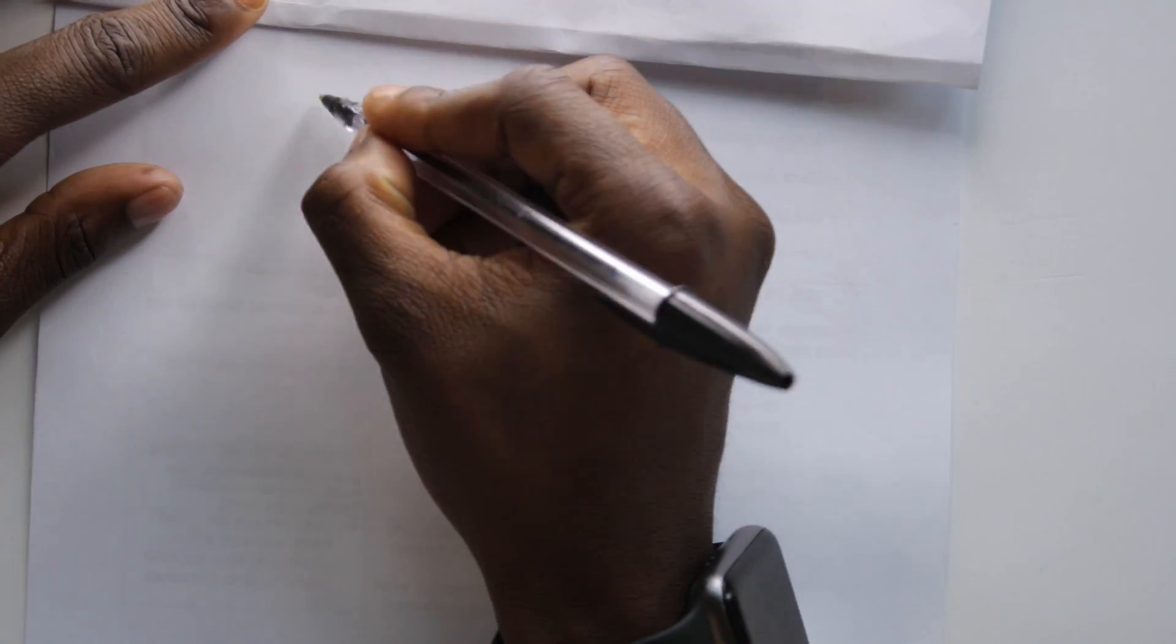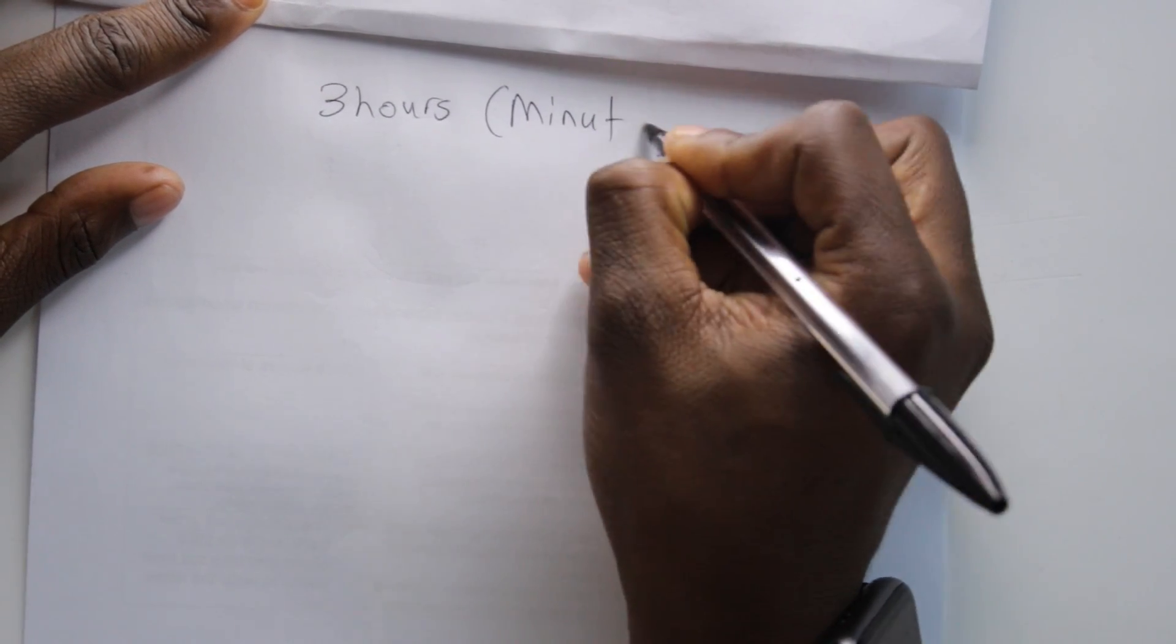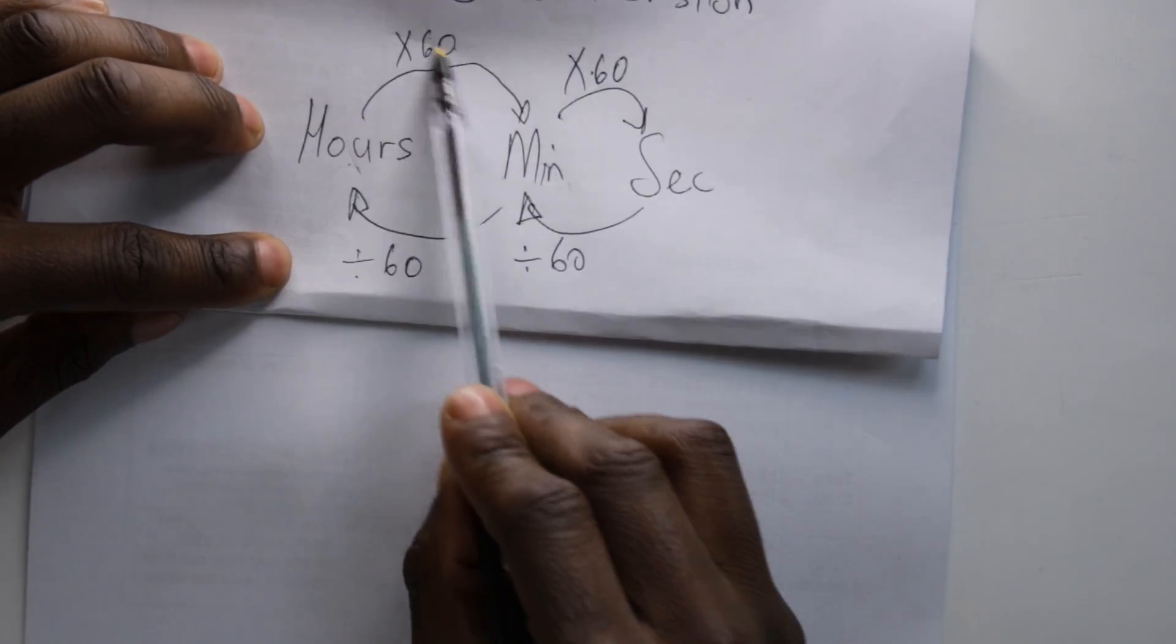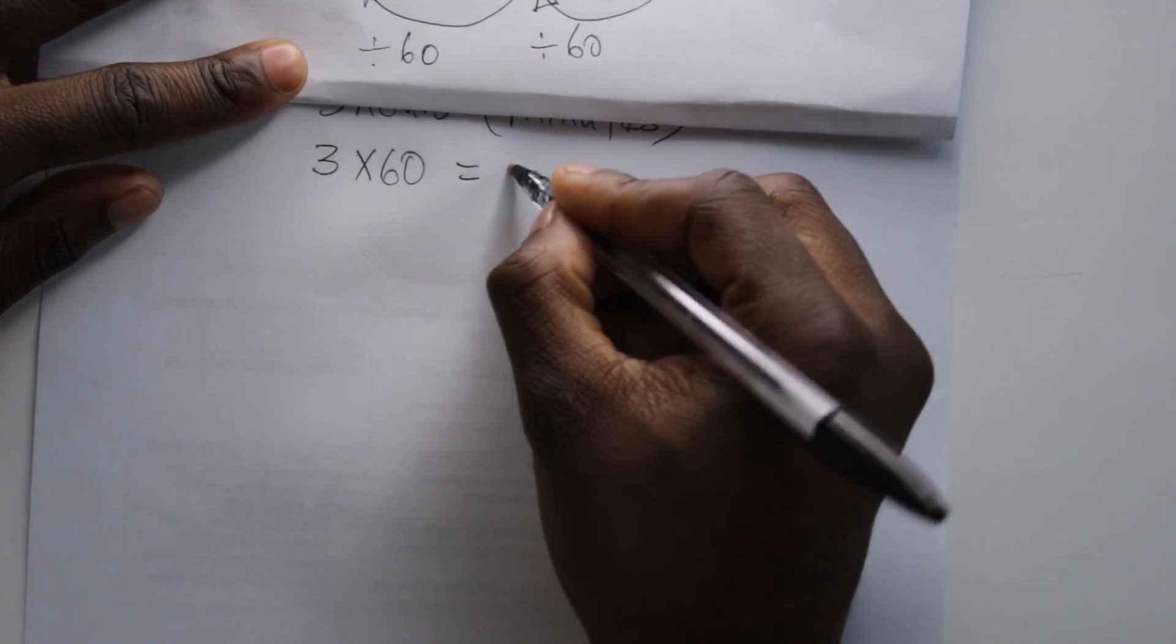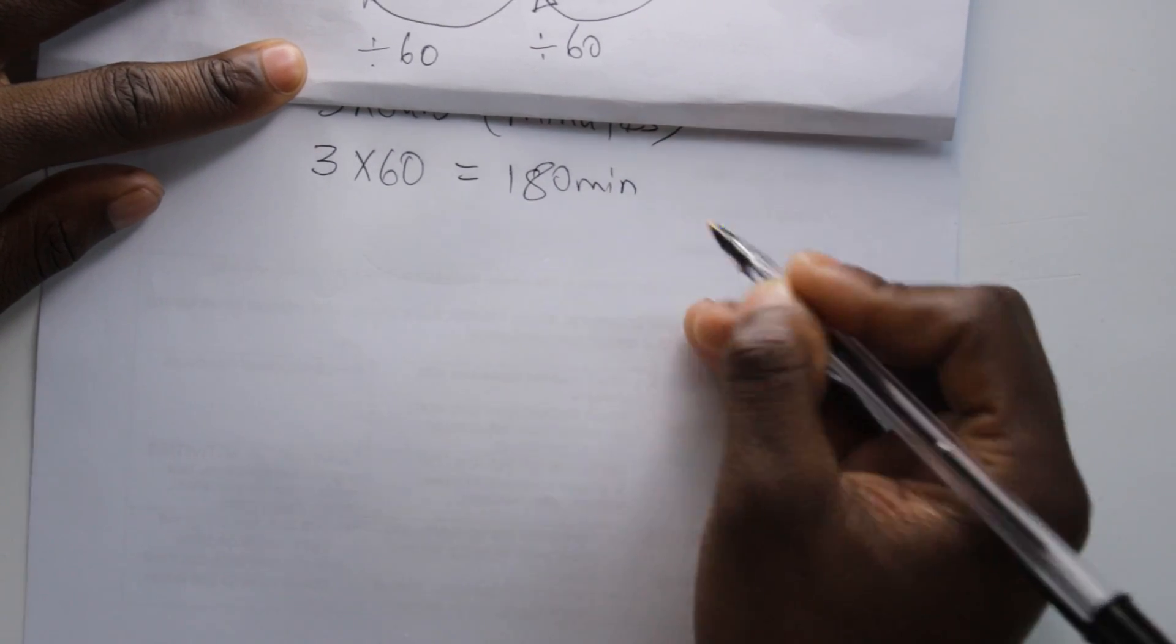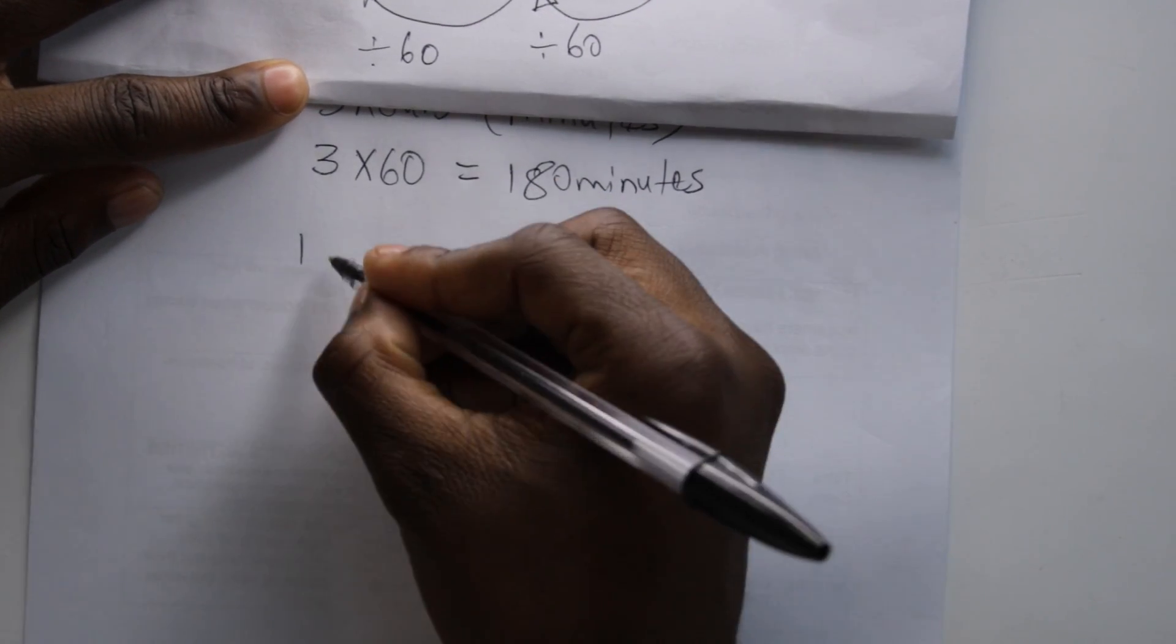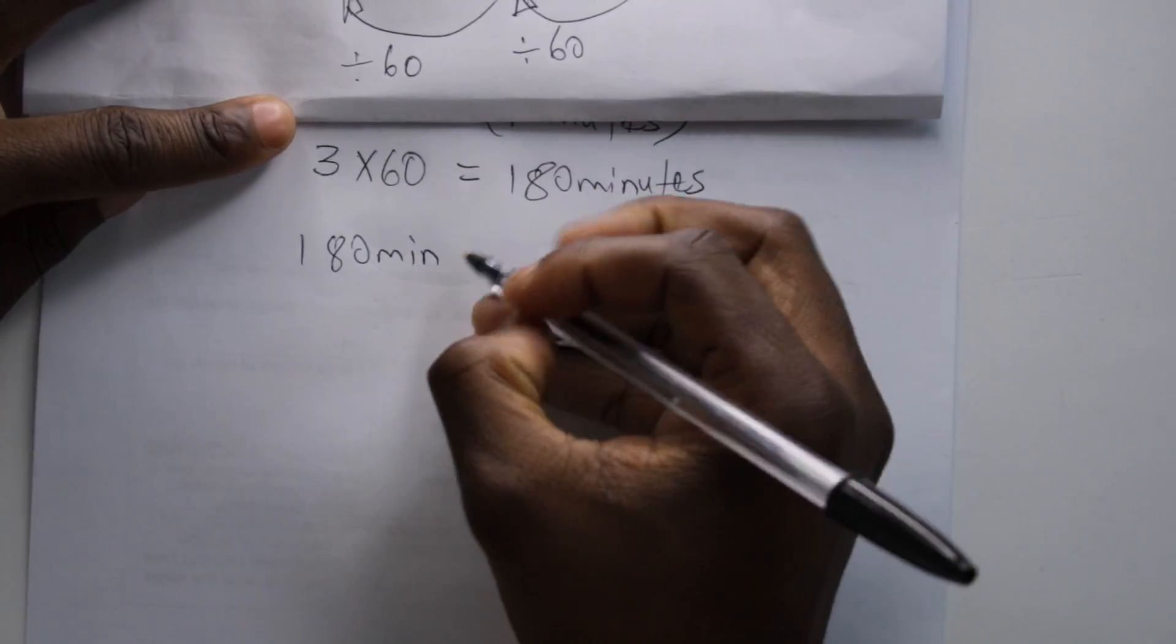Let's convert three hours to minutes. Three hours to minutes, three times 60 that will give us 180 minutes. Then from minutes to seconds we have 180 minutes times 60, the answer will be 10,800 seconds.